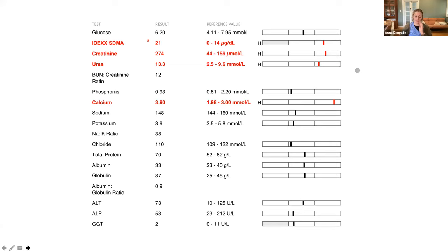There's one more differential — Addison's disease. With azotemia and hypercalcemia both being symptoms of hypoadrenocorticism, that should absolutely be on your list. In fact, if you're sitting a medicine exam, just put Addison's on the list for everything.